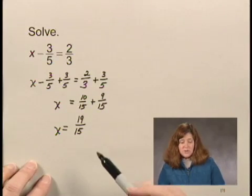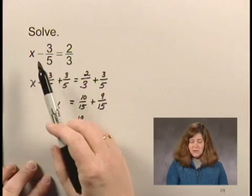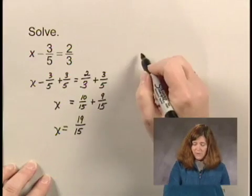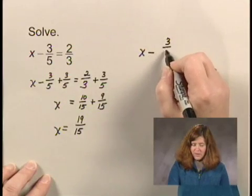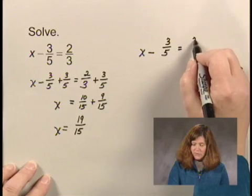Now, in order to determine if that is the solution of the equation, we want to check the answer in the original equation. The equation was x minus 3 fifths equals 2 thirds.